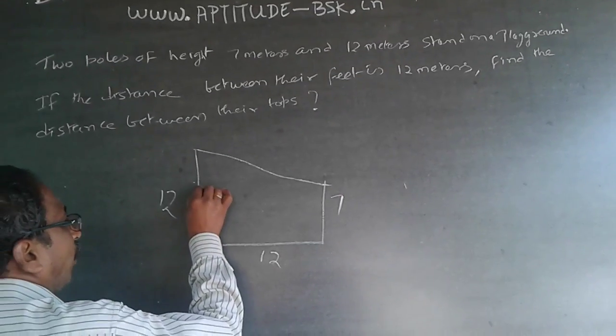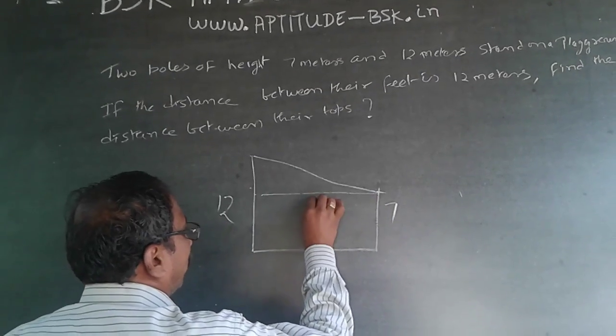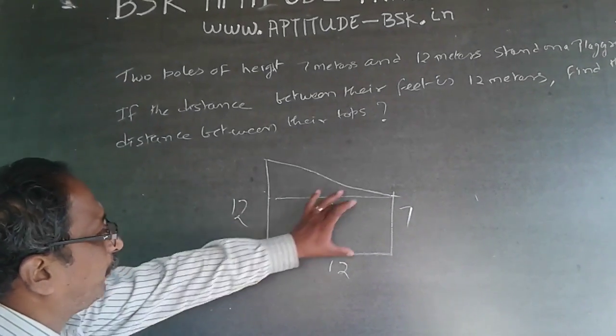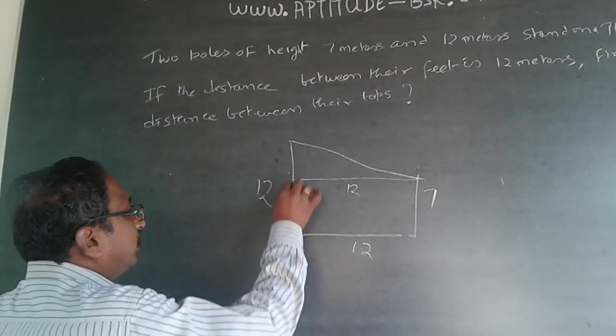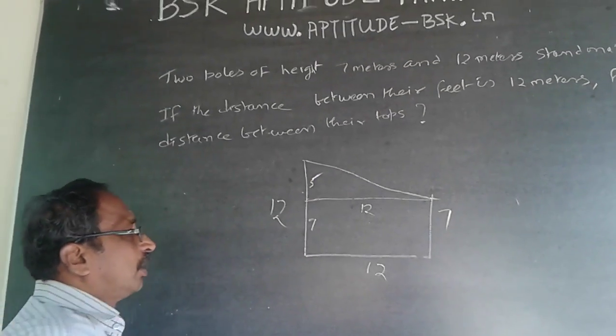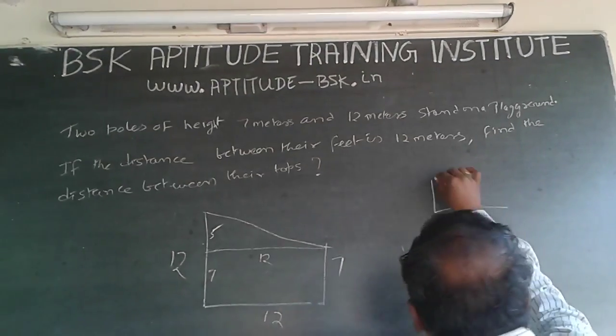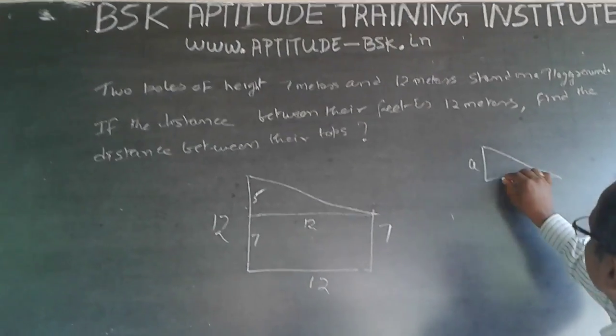When I draw a line like this, this will also be 12. And because this is 7, and this is parallel to it, this will also be 7. And this difference will become 5.